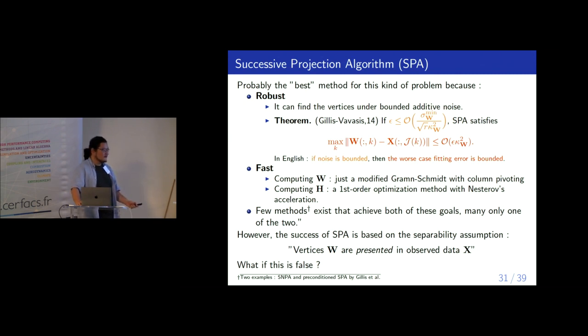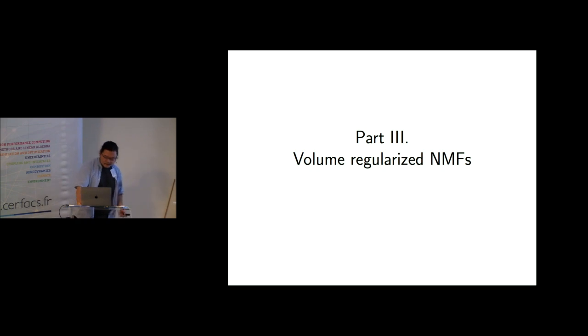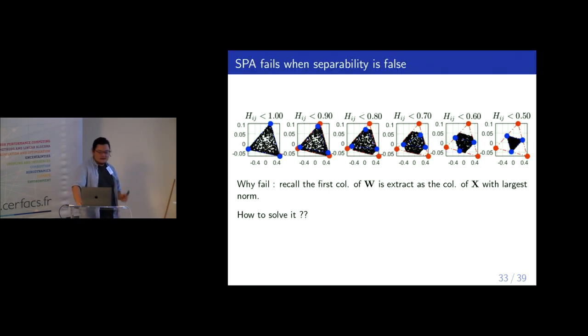However, this method wins, but it has an assumption. If you want to attack a thing with a mathematical proof, that means everything here logically sounds. The way you can attack it is to attack the assumption. What is the assumption? The vertices are inside the data points. What if this is false? So this comes to part 3, that means what I work. The situation is now the same. Let's say you have three points. And now the coefficient H is not 1. That means the largest value of the H or all the H_ij is bounded by some number. The red points here are the ground truth. That means the vertices that generate all the data points here. And the blue one is, in fact, the result from SPA. And you can see if the points are further and further away from the vertices, SPA fails. Well, this is common sense. Then the problem is how to solve it.